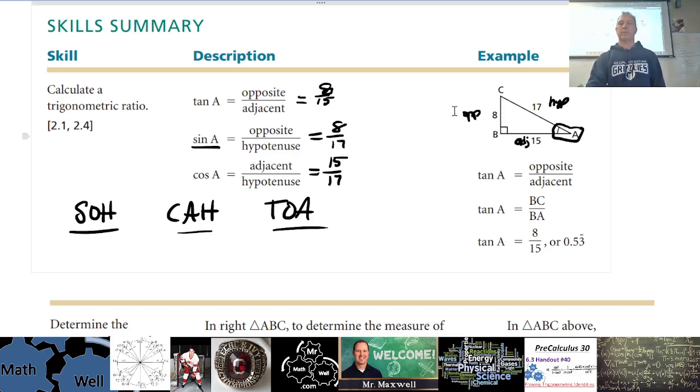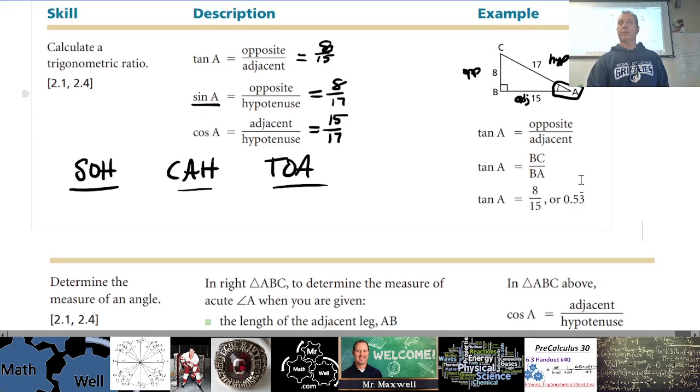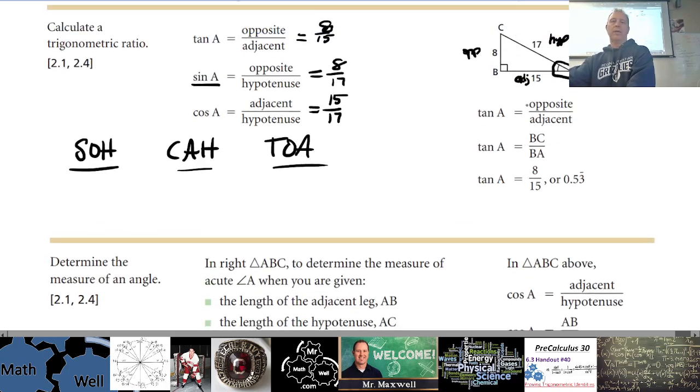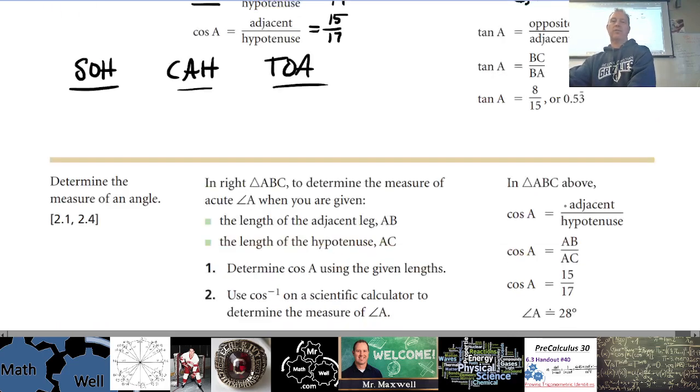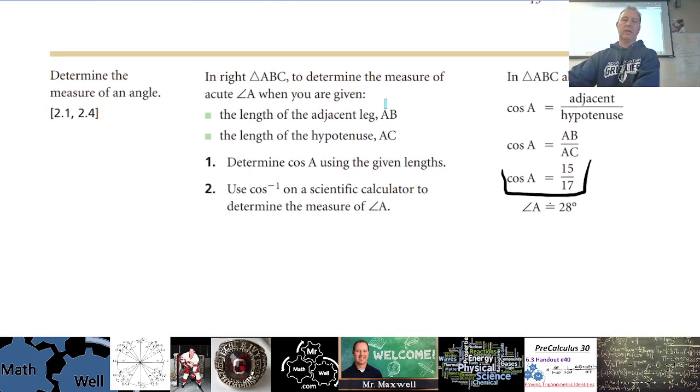Okay, so here we go, it gives you the tan over here, 8 over 15. Any questions? The other part of this was determining the angle. So if you're given two sides and you need to determine an angle, for example in the above example right here, we have cos of A is 15 over 17. You see that, cos of A is 15 over 17.